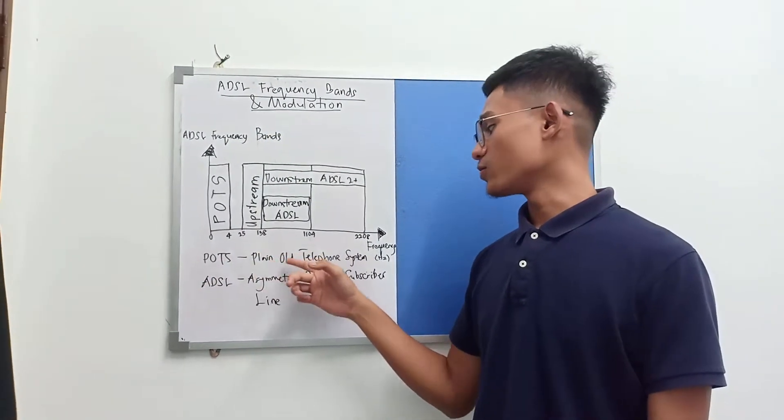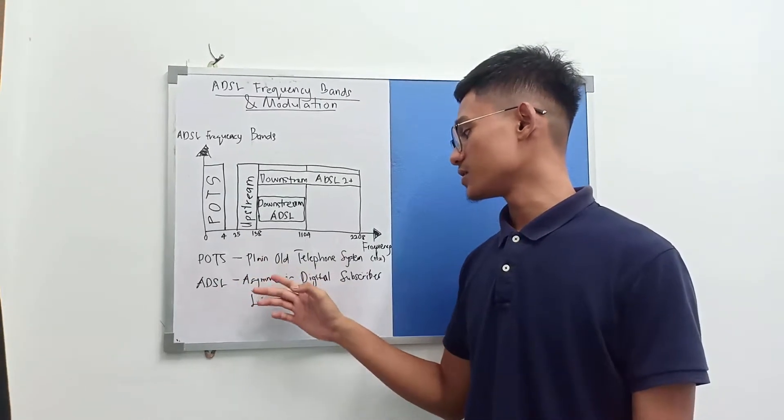POTS stands for plain old telephone system, however ADSL is an asymmetric digital subscriber line.